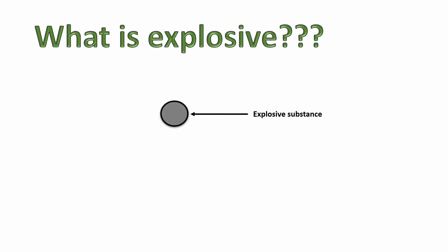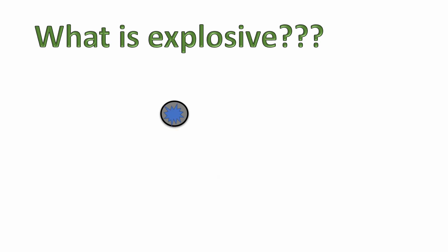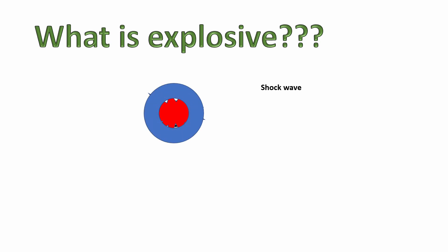All these definitions describe the same thing. When the explosive substance is initiated or stimulated by some detonation, a chemical reaction takes place inside the explosive and huge quantities of energy are liberated — resulting in shock waves and gas pressure. This is the complete chemical process of explosives: chemical energy converts to mechanical energy.